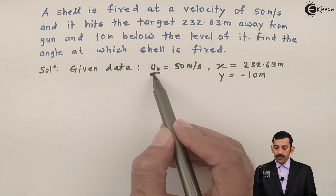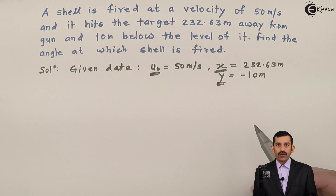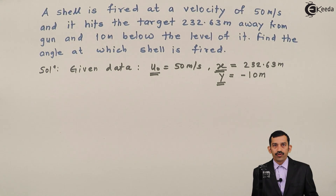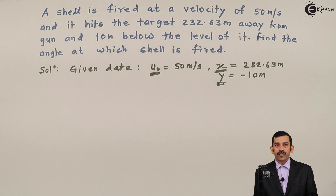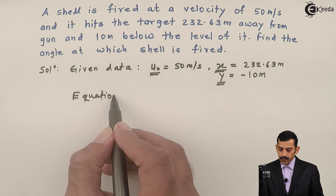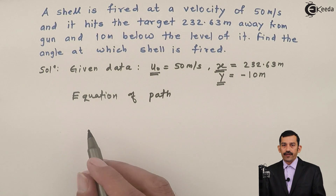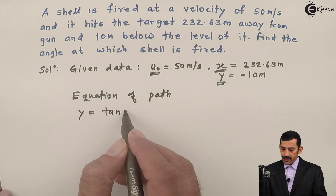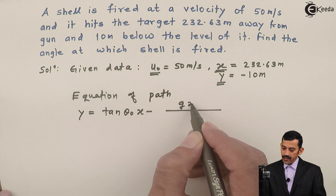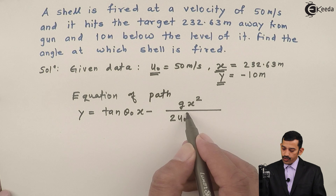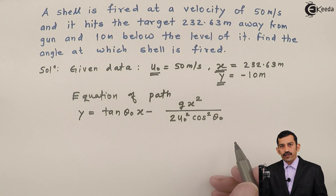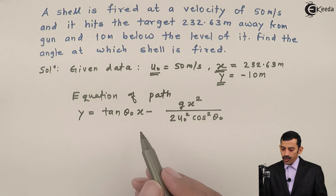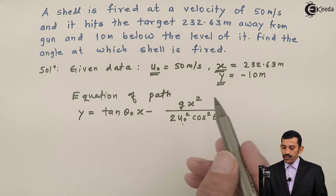Now, U₀ is given, X is given, and Y is given. As you know, the equation of path is a relation between X, Y, U₀, and θ₀. Out of these, X, Y, and U₀ are known, so the only unknown is θ₀. We can easily find θ₀ using the equation of path.